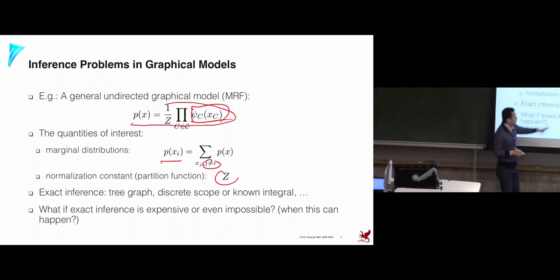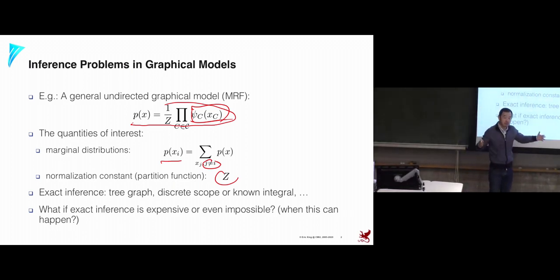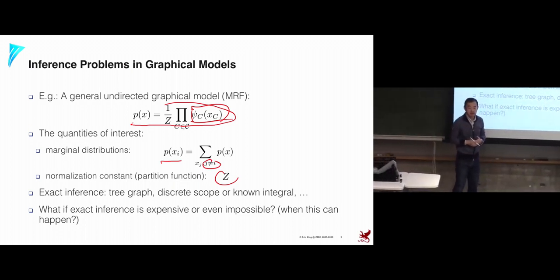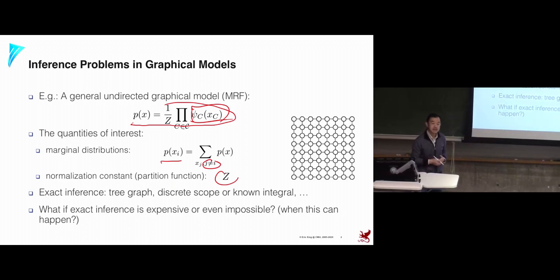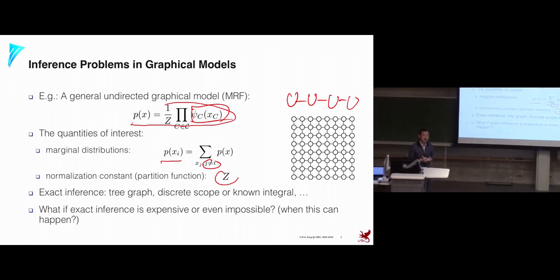What if we run into a case where none of these conditions hold? It could be as trivial as having a simple graphical model but not knowing how to do the integral — some strange distributions have irregular forms. Or you have a big graphical model with too many configurations to sum over. For example, even if you can organize variables into a tree of cliques, the clique size can be as large as the whole graph, making exact inference infeasible.